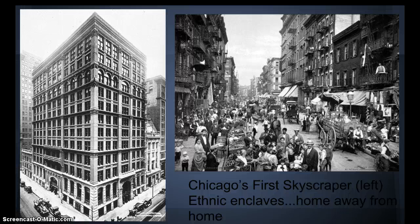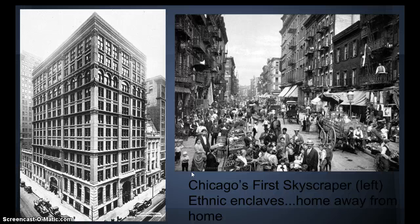This extreme congestion — we're going to see what the effects are. Chicago had the first skyscraper here on the left. Immigrants settled into these cities where it was cheap and affordable. They lived with their own ethnic groups in neighborhoods such as Little Italy, where they could speak their native language and recreate their homeland with churches, clubs, and newspapers.